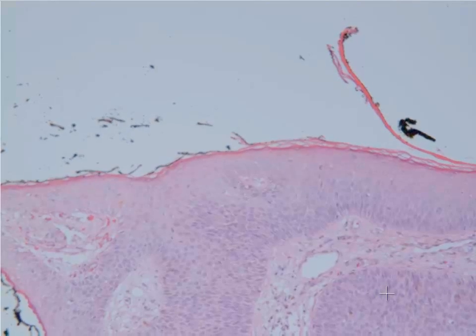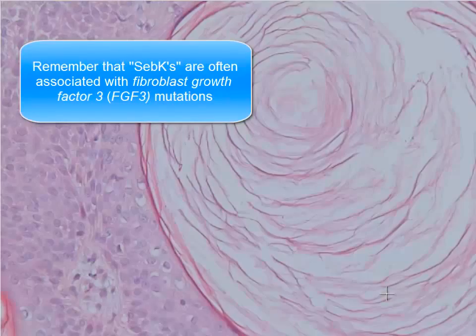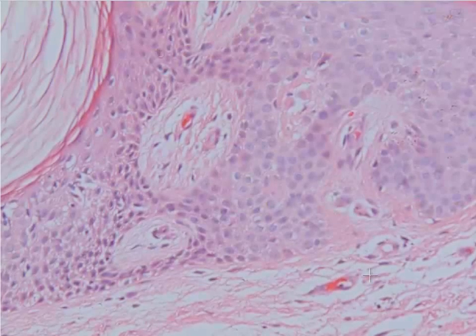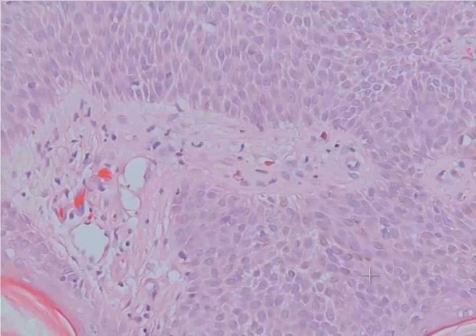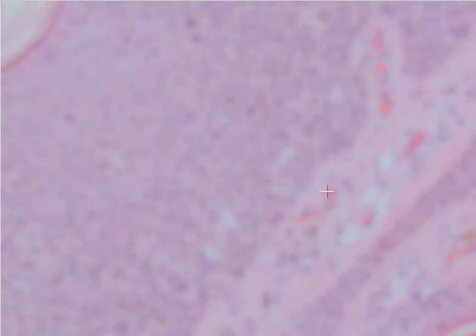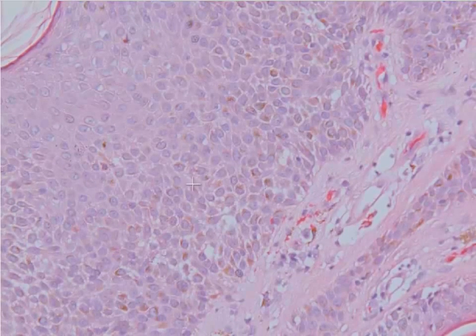One of the other things you commonly see in these is that they can become pigmented. Often in the clinic this may look like a pigmented lesion that could raise concern for melanoma; however, they're completely benign. In this one you can see in these cells that we have a little bit of melanin pigment scattered around in the epidermis and then in the dermis.